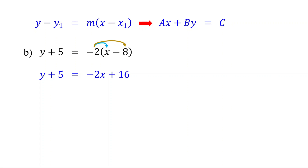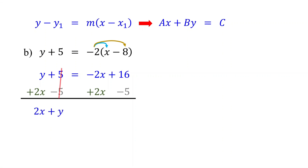Next, add 2X to both sides to collect the variable terms on the left, and subtract 5 from both sides to collect the constants on the right. On the left, these cancel, leaving 2X plus Y. On the right, these cancel, leaving 16 minus 5, which equals 11. Finally, check that the coefficient of X is positive — here it is positive 2 — so there is no need to multiply by negative 1. So your equation is in standard form.